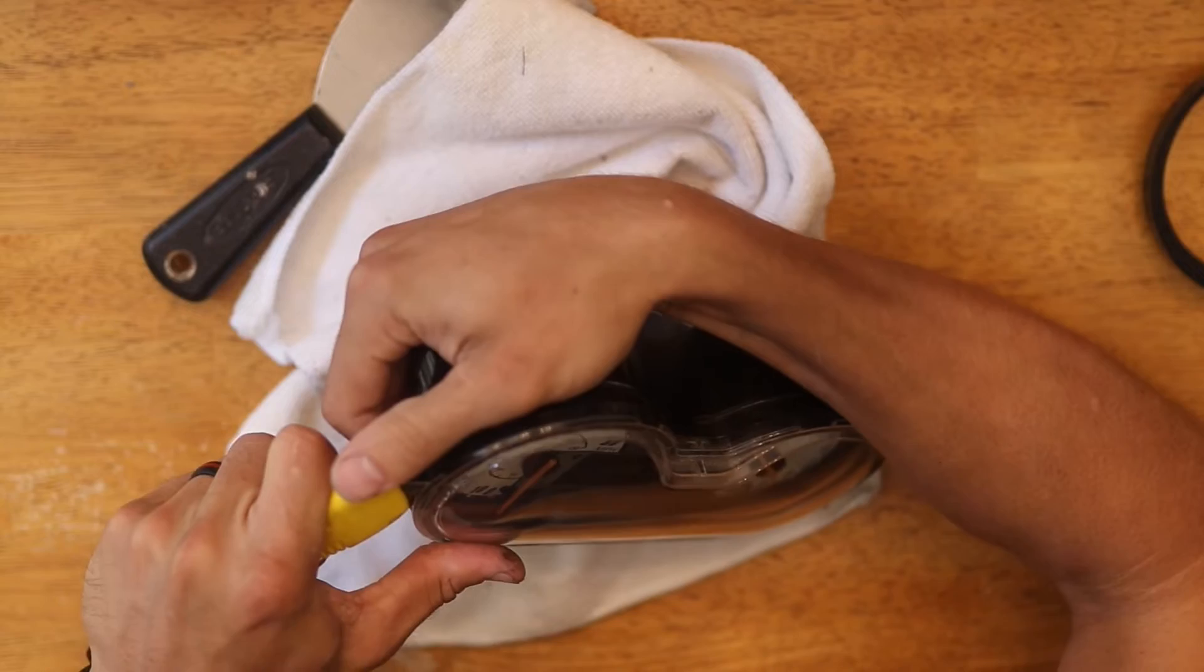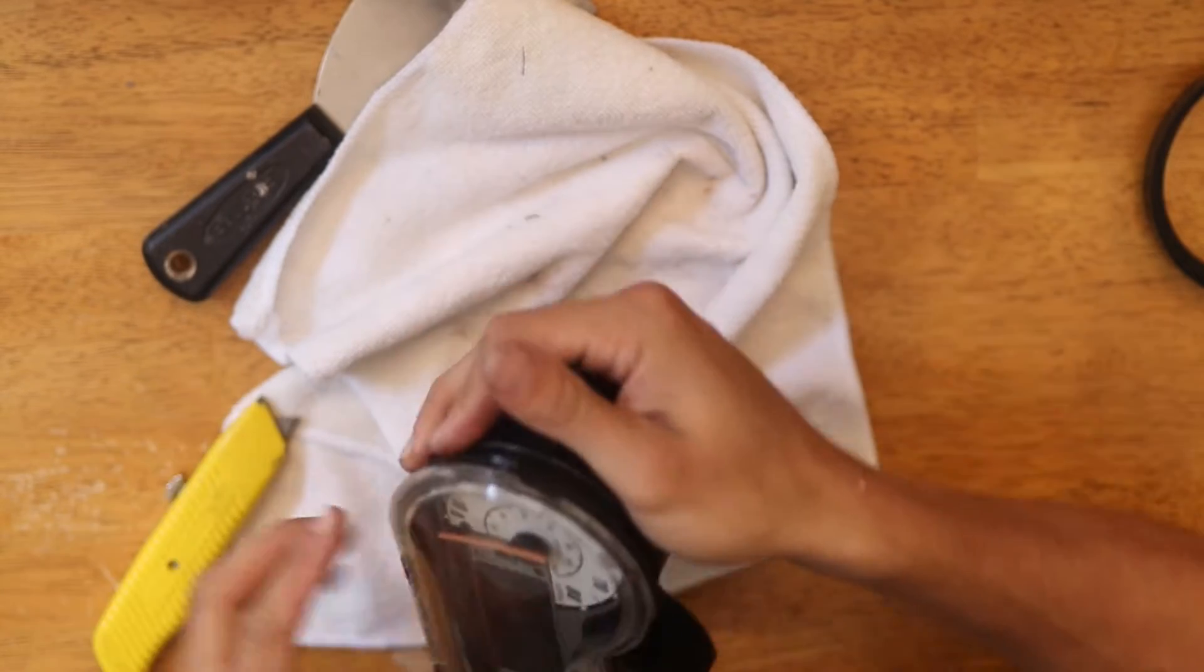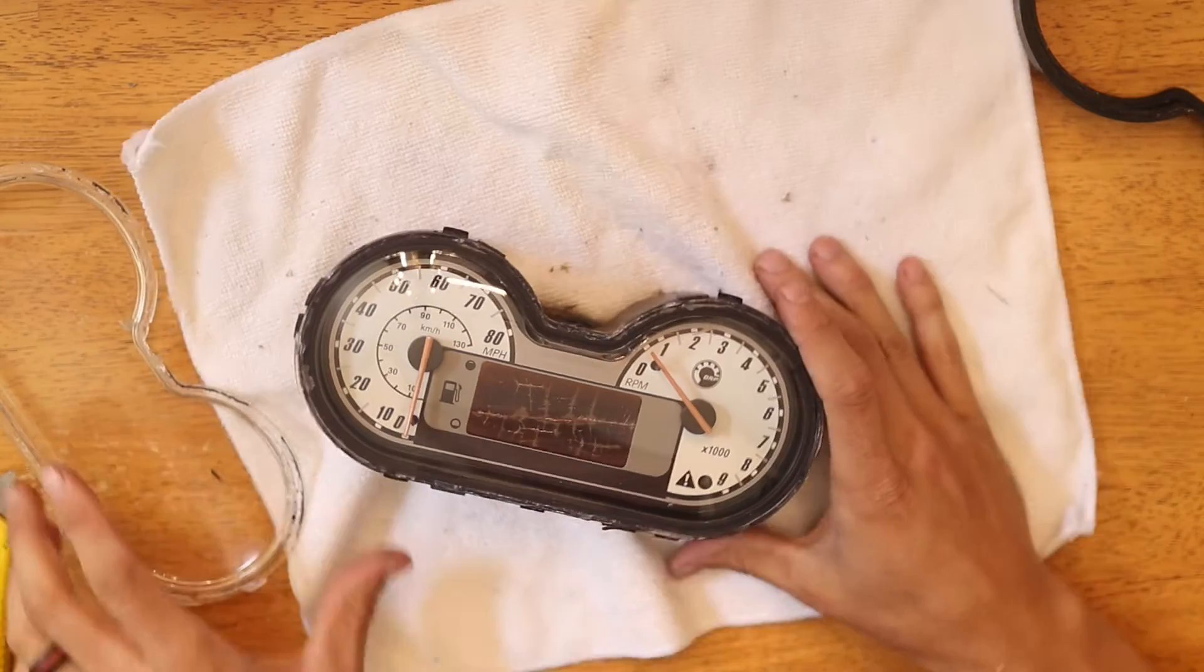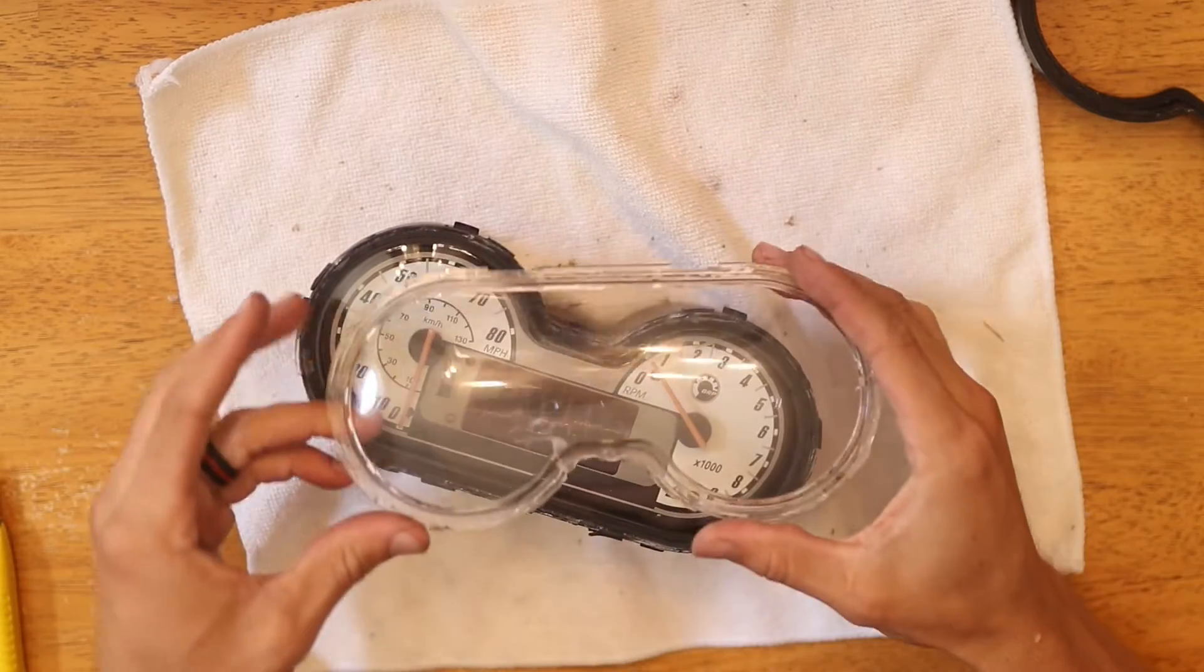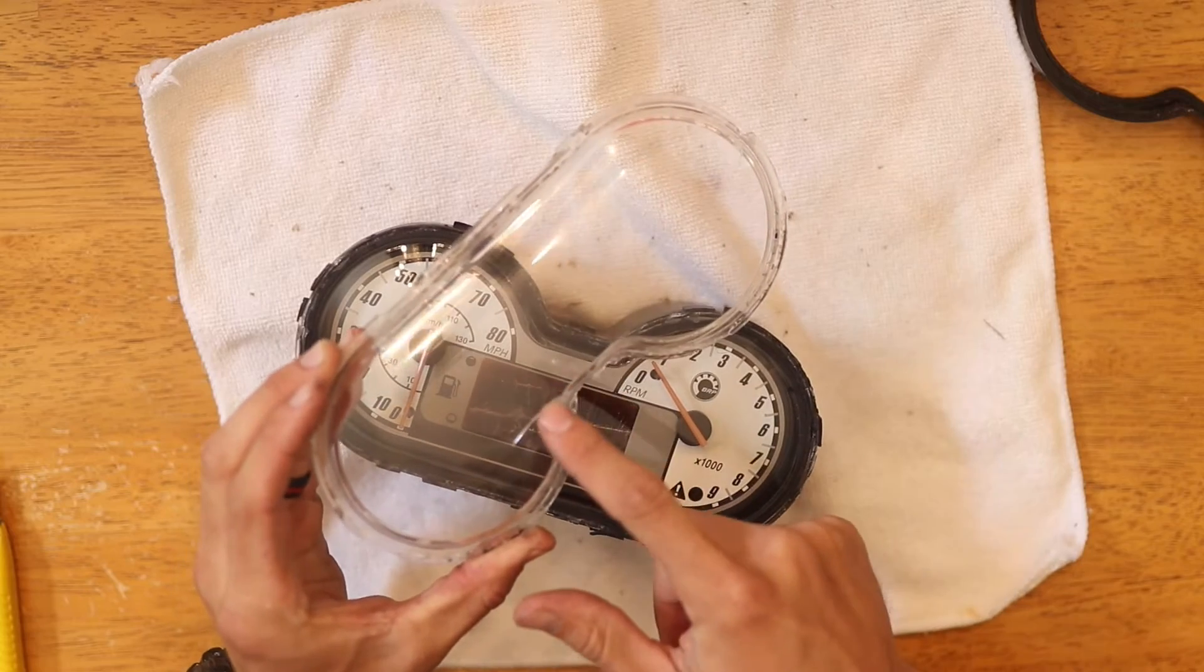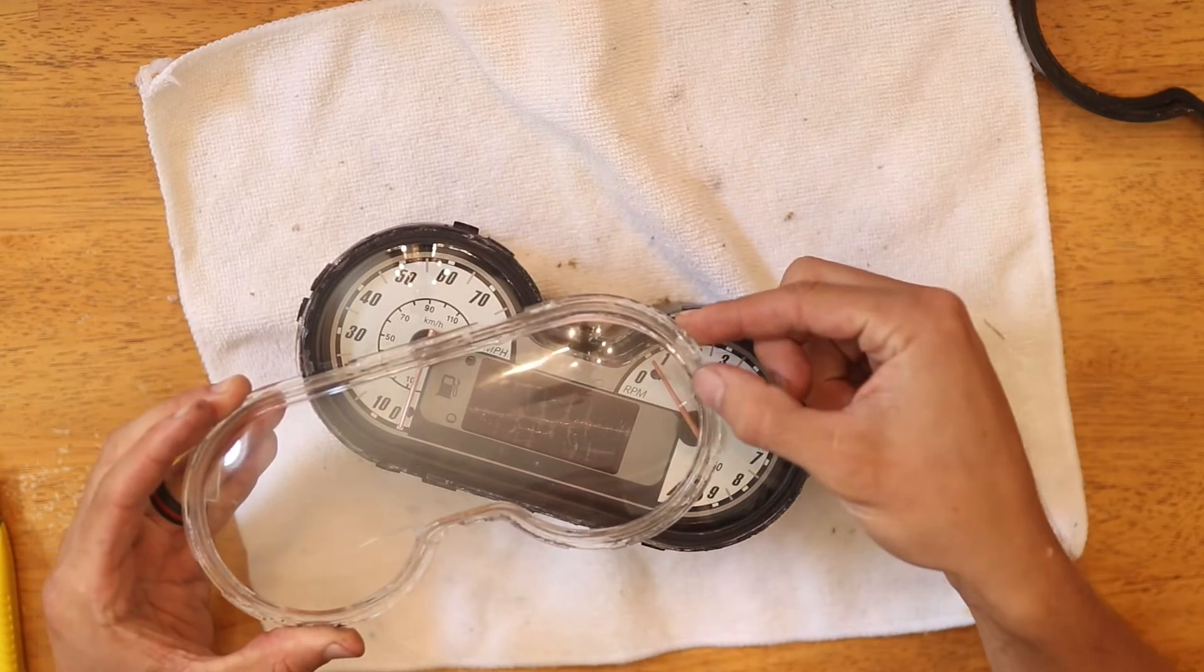Not only was the method that I chose difficult, it also resulted in me cracking this clear plastic in two places. After I was finally able to separate the clear plastic, I found a second layer of plastic underneath.